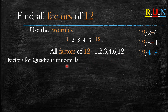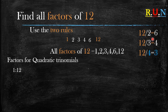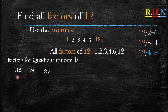Now when it comes to quadratic trinomials we use the same factors, but to make things easier I would advise you to pair them. Always start with 1 and the number itself — in this instance 12 — so we pair 1 and 12. When we divided 12 by 2 we got 6, so 2 and 6 are also a pair. When we divided 12 by 3 we got 4, so those two are also a pair. When you times 3 times 4 it's 12, 2 times 6 is also 12, 1 times 12 is also 12. Pairing them makes it easier to work with quadratic trinomials.